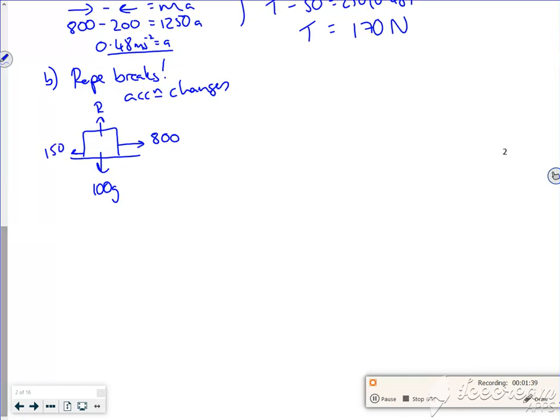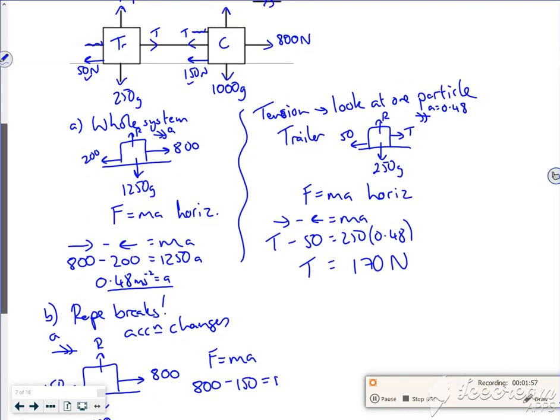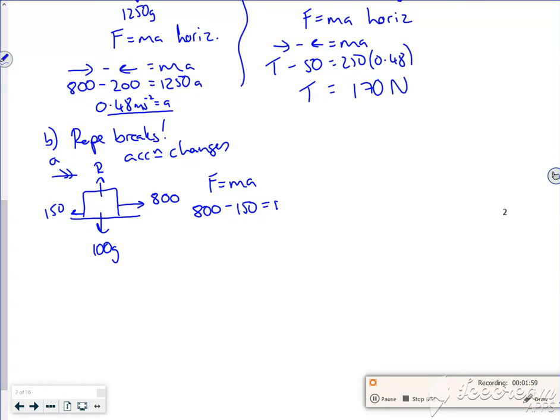I want to work out what the a is. So if I look at F equals ma, the force in the direction of travel is the 800, the force opposing is just the 150, and that equals 1000 times a. So I've got 650 divided by 1000. So my new acceleration is 0.65 meters per second squared.